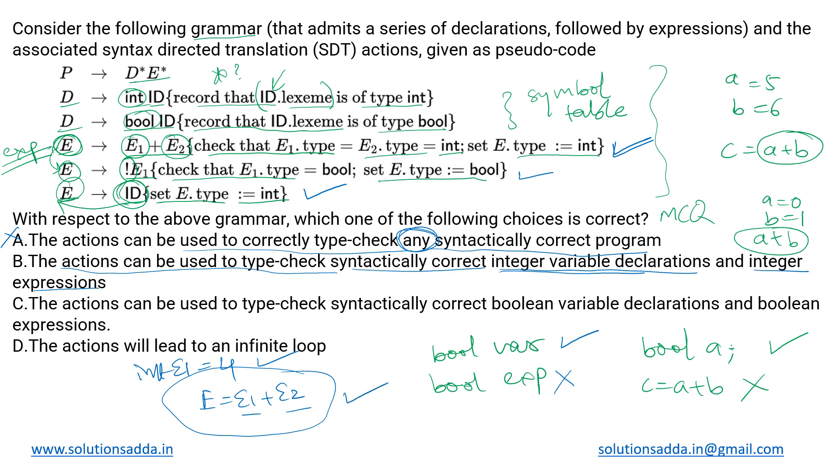Let us also check the other ones. The actions can be used to type check syntactically correct boolean variable declaration and boolean expression. Now we saw boolean variable declaration is to some extent in this particular line being checked, but not the boolean expressions, because in this line we only have that particular facility for integer expressions. So this one would be incorrect. Then last, the action will lead to infinite loop. The loop is definitely not possible, so both of these turn out incorrect. We'll be going with option B.